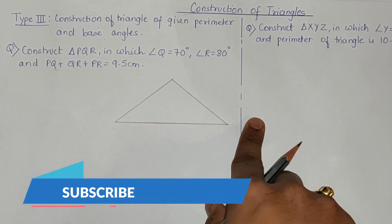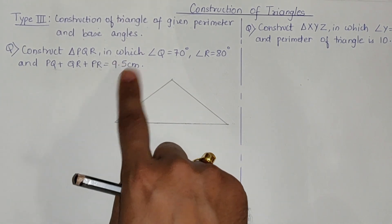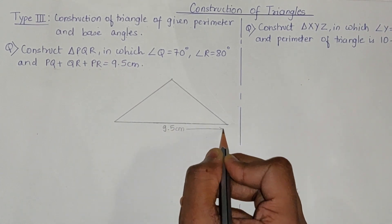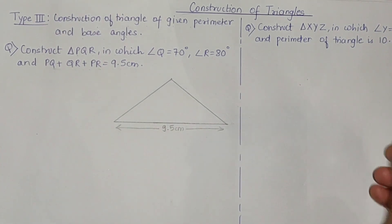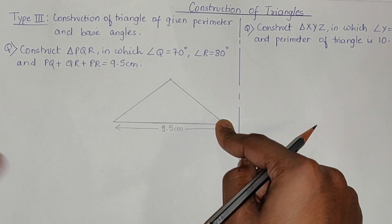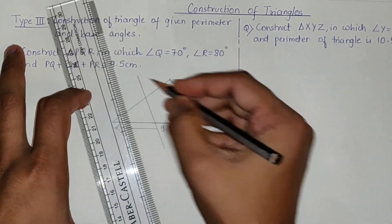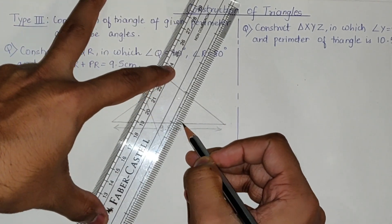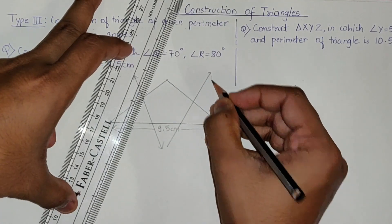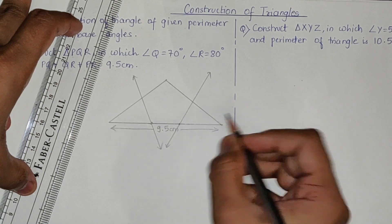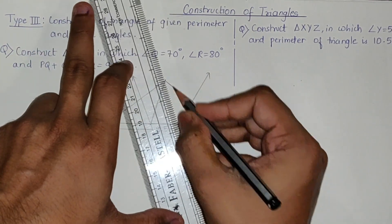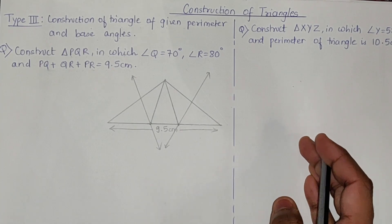I have drawn a rough triangle. You have to stretch it a bit because the perimeter is quite large. You have to take the perimeter as the base of the triangle. After doing this, you take the perpendicular bisector of these two sides. I have drawn them and connected the intersection points to the top vertex.